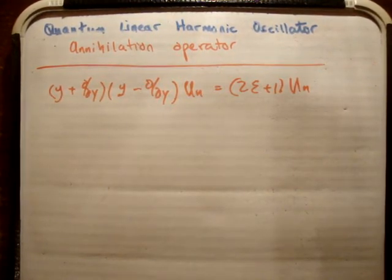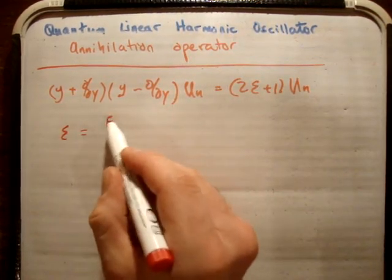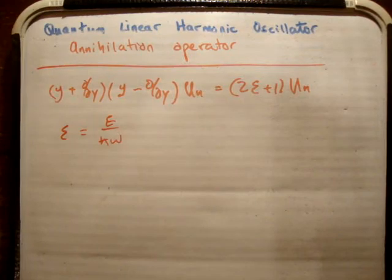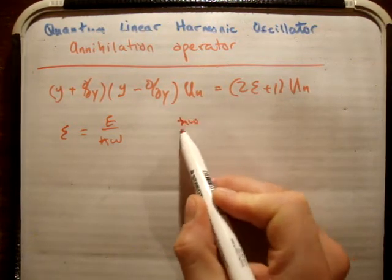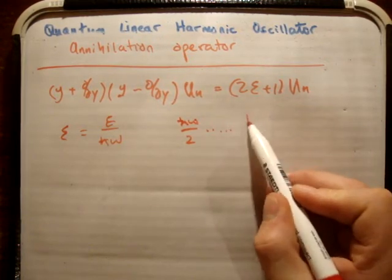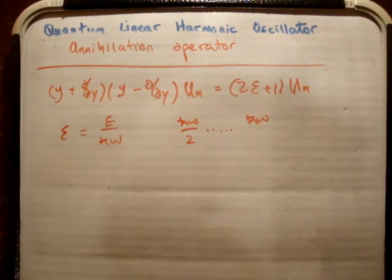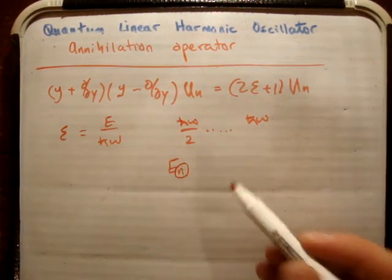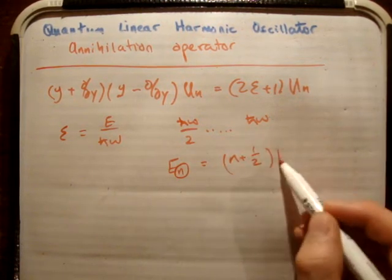But we also know the following. We know that epsilon equals E over h-bar omega, and we found out in the past that the smallest energy was h-bar omega over 2. I told you, I didn't really prove it to you, but the actual steps thereafter are in steps of h-bar omega.